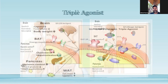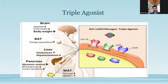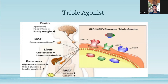For triple agonist, definitely good metabolic control, a good degree of weight loss, good reduction in hepatic steatosis, and increase in browning of fat. You have one molecule capable of stimulating receptors of GLP-1, GIP, as well as glucagon, thereby cascading downstream signaling leading to enhanced and improved metabolic milieu.